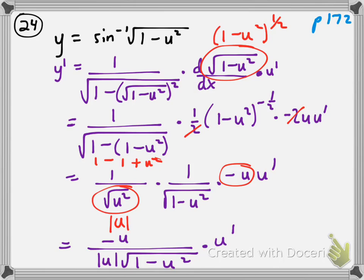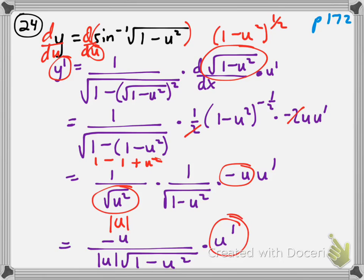It's a bit unusual because we're normally used to seeing u as meaning it's a function of x. If this problem was y as a function of u, and we were taking the derivative of y with respect to u, then y prime really means dy/du. So if we take the derivative of the right side with respect to u, the only thing that changes is the u prime at the bottom — we wouldn't need it, because u prime would be du/du, which is just 1.